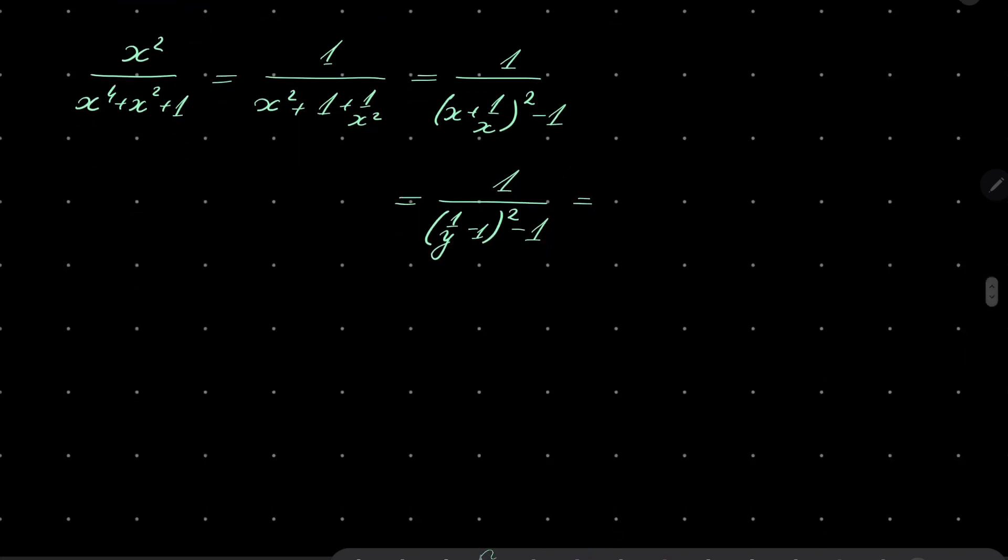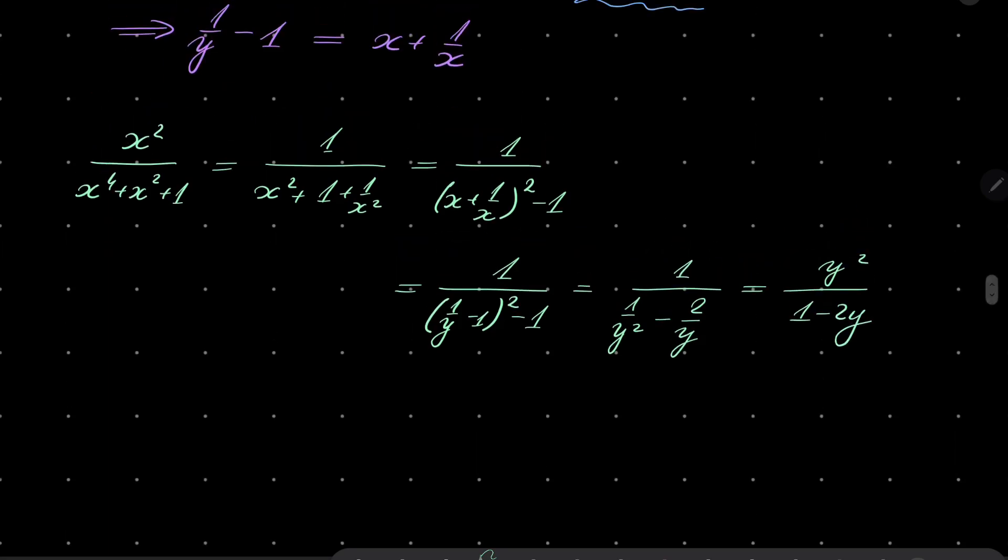So I can actually instead of x plus 1 over x squared, I can put 1 over y minus 1 squared, which can be written in the following way: is 1 over 1 over y squared minus 2 over y, and again multiply and we'll have y squared over 1 minus 2y. Of course that works for y...